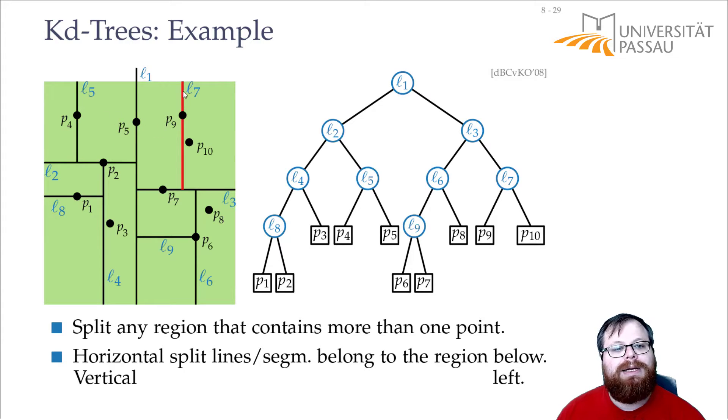Now we've divided the plane into these rectangular regions, and in every one of these rectangular regions there's exactly one point, or on the boundary of it. Let's try to formalize this process.